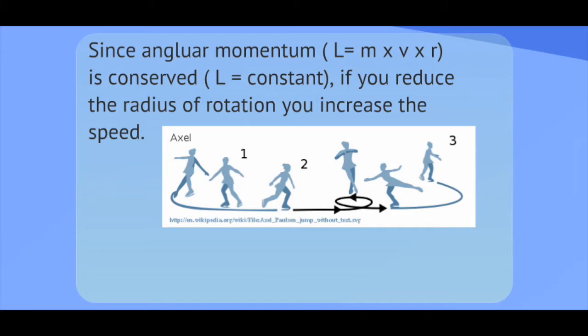So if I'm an ice skater, and I was to pull my arms in, since L has to be constant, and my mass doesn't change, if I reduce r, I have to increase my speed. So I will spin faster by pulling my arms in, or slower by pushing my arms out.